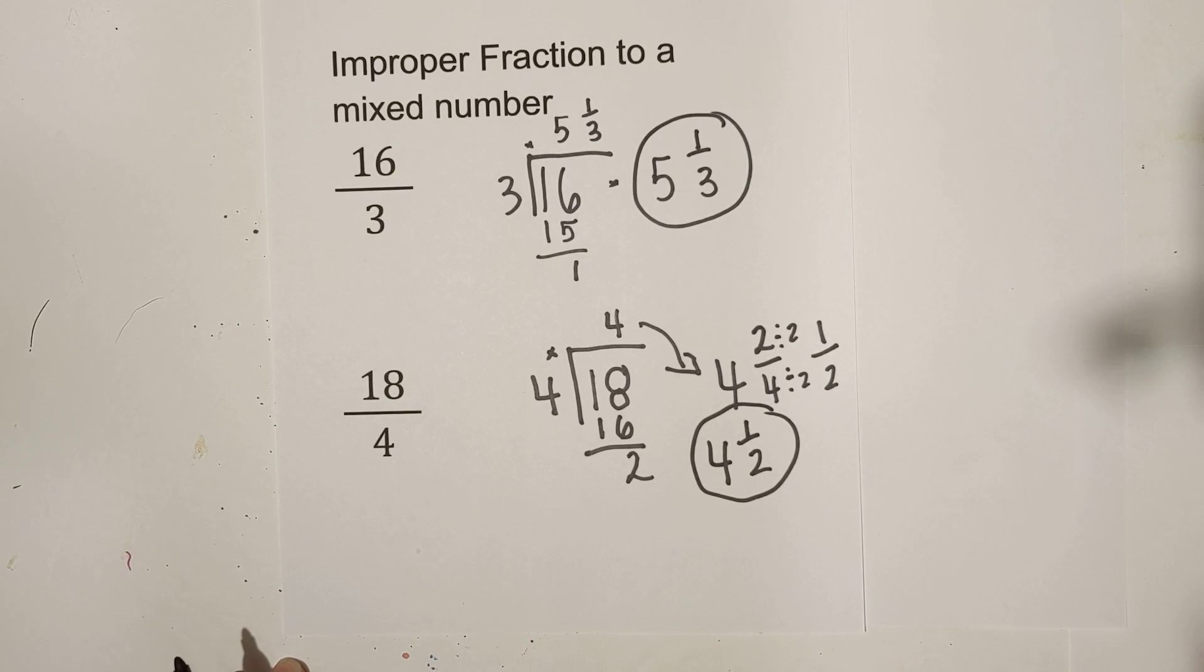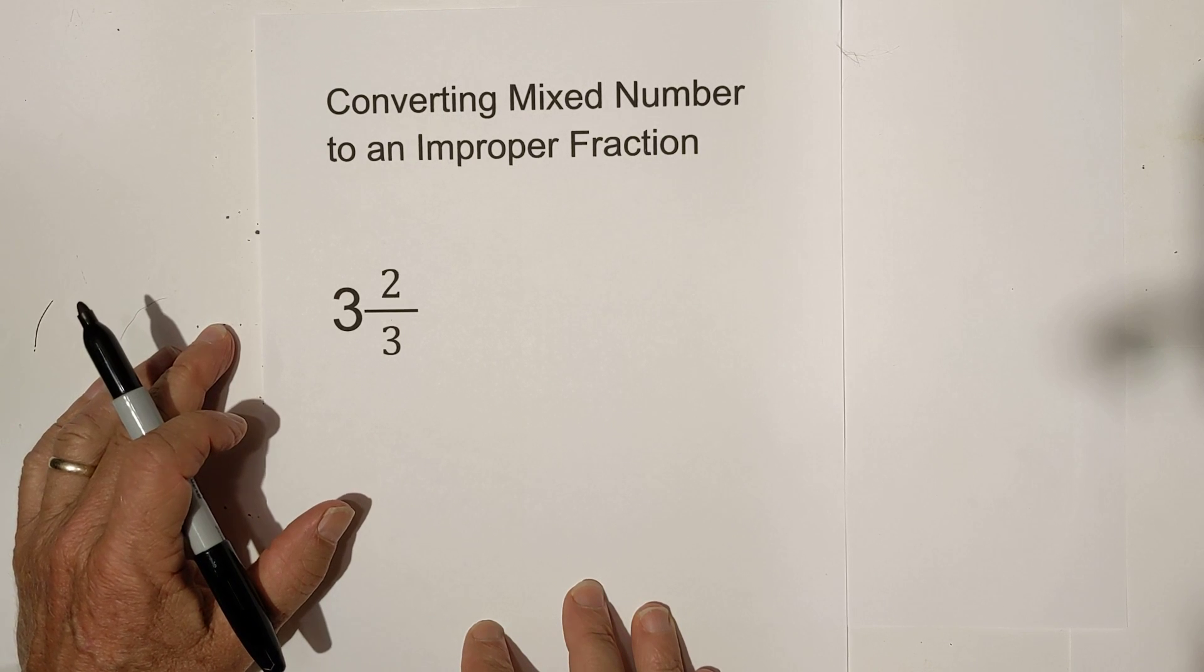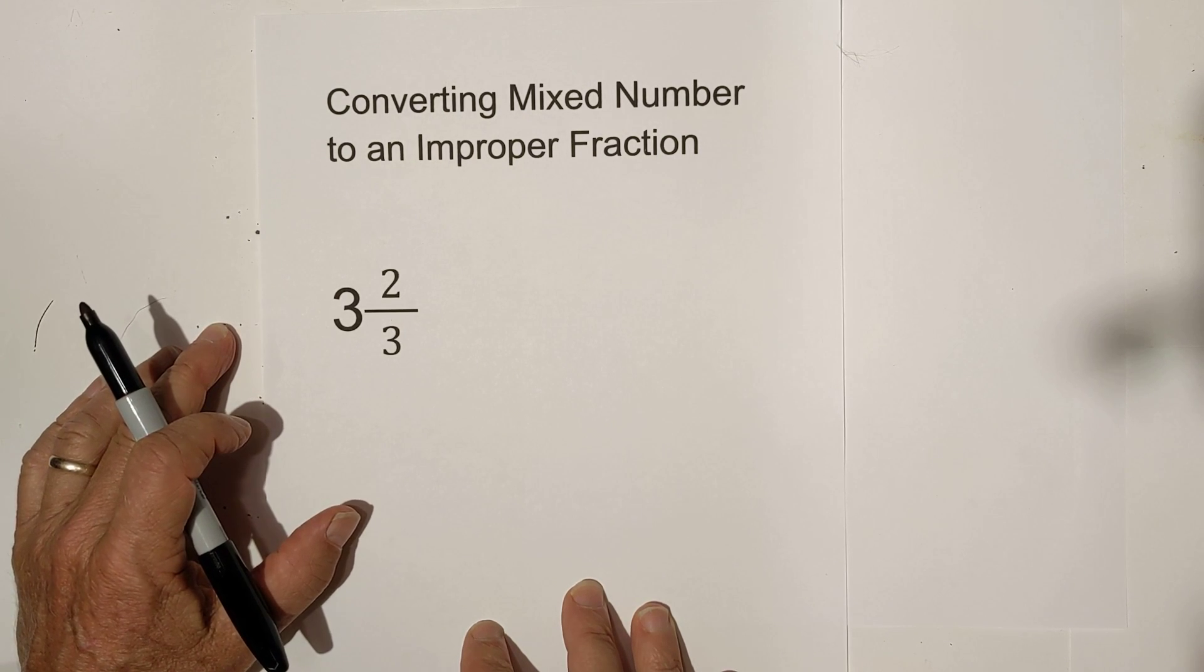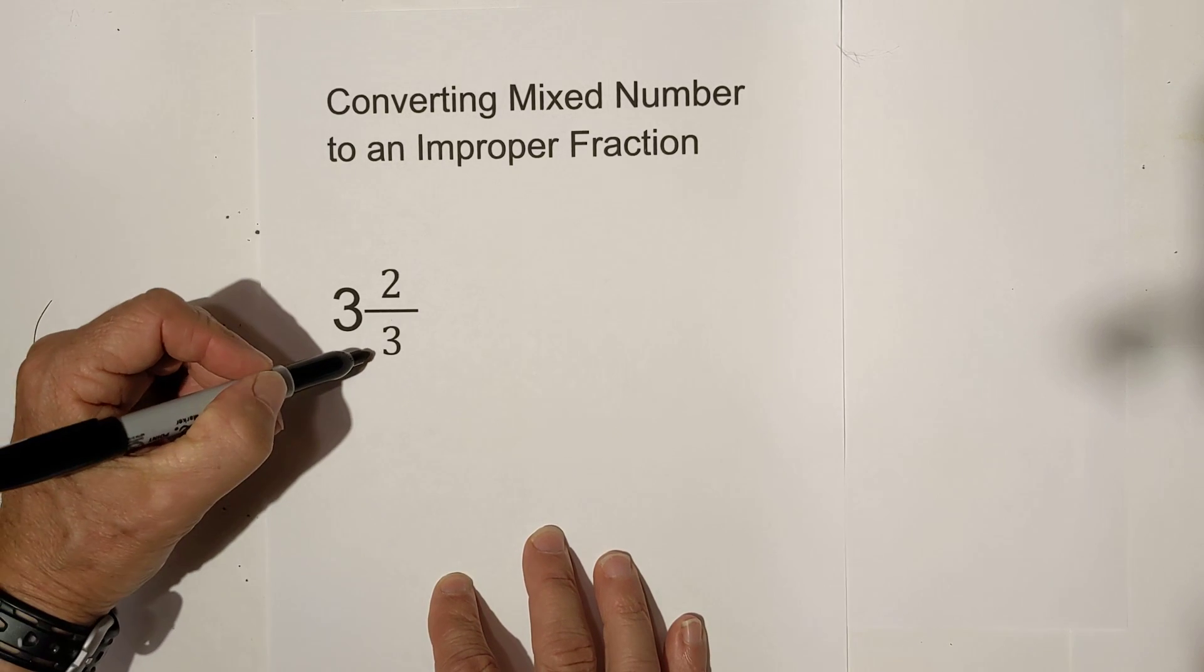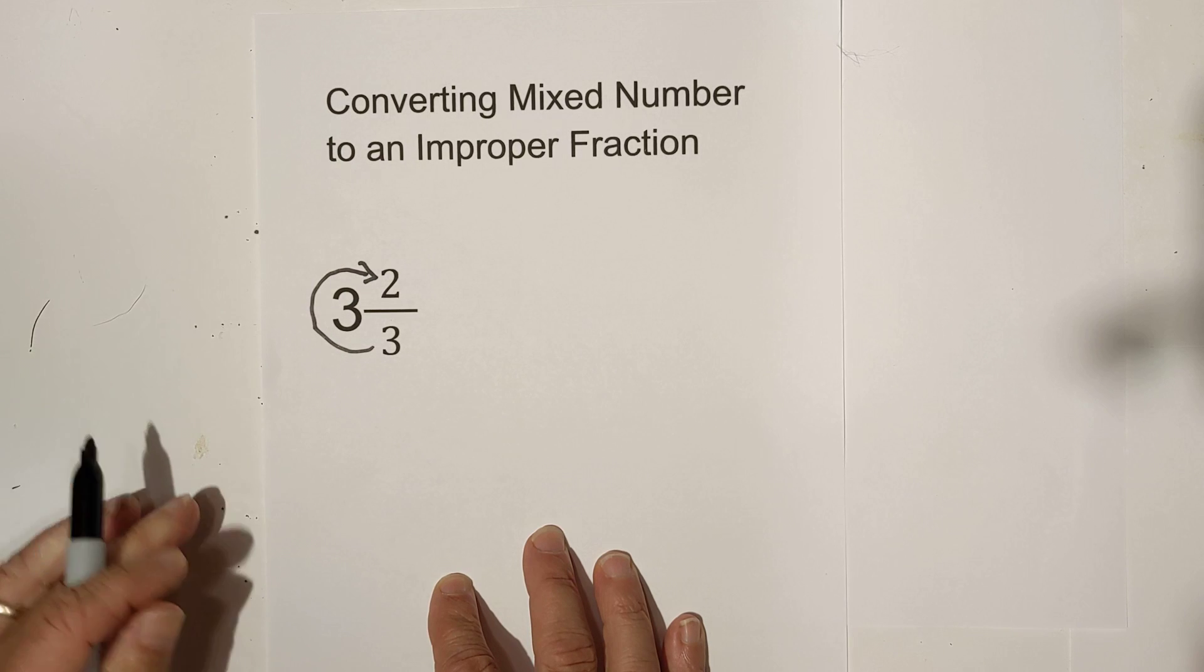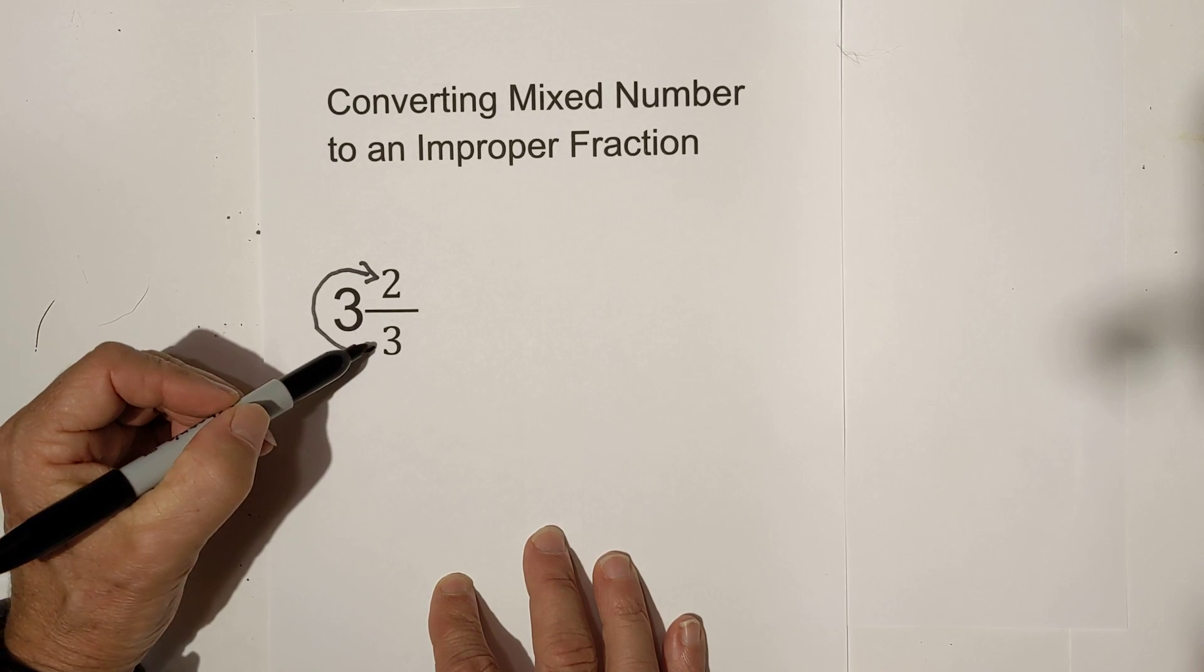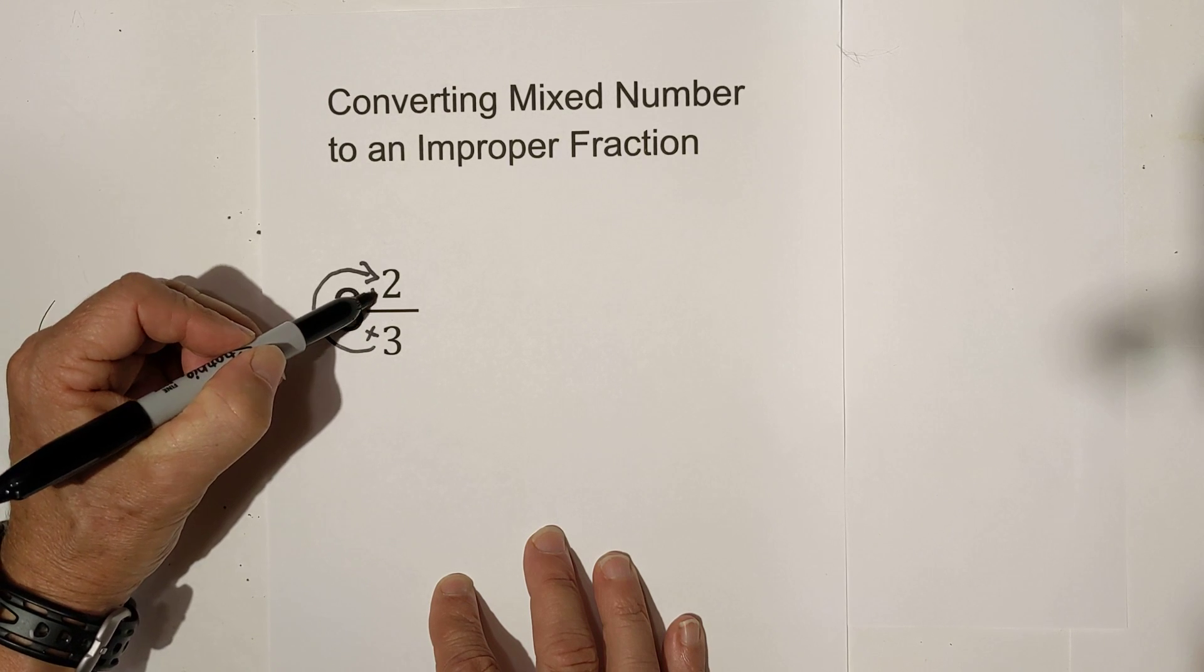Now let's take a mixed number and convert it to an improper fraction. A lot of times like if you are multiplying mixed numbers or dividing mixed numbers you need to convert it to an improper fraction. And basically what you do is I call it you go around the house or you go around the mixed number and what you do is you first multiply and then you add.